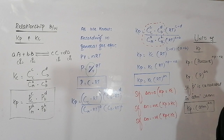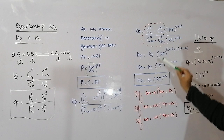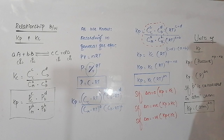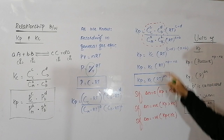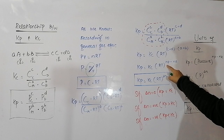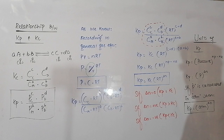This ratio of concentrations is exactly equal to Kc. Replacing it with Kc, RT becomes a common factor and the combined power becomes (c+d) minus (a+b). So Kp equals Kc times RT raised to power (c+d−a−b). Here, c+d is the sum of moles of products and a+b is the sum of moles of reactants. The difference between moles of products and reactants is represented as delta N. Hence Kp = Kc × (RT)^ΔN.